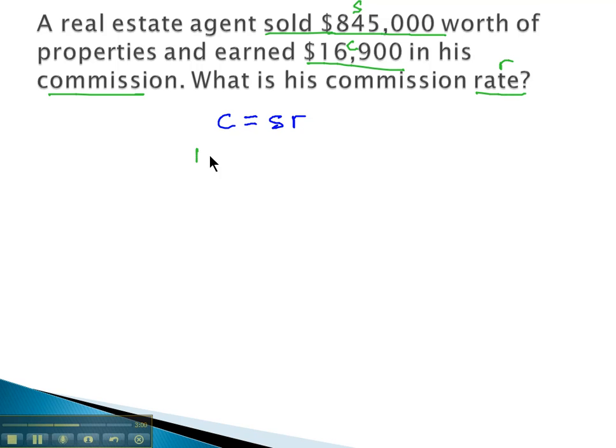The commission, we're told, is $16,900 equals S, the sales, which we're told are $845,000, times the rate, R.